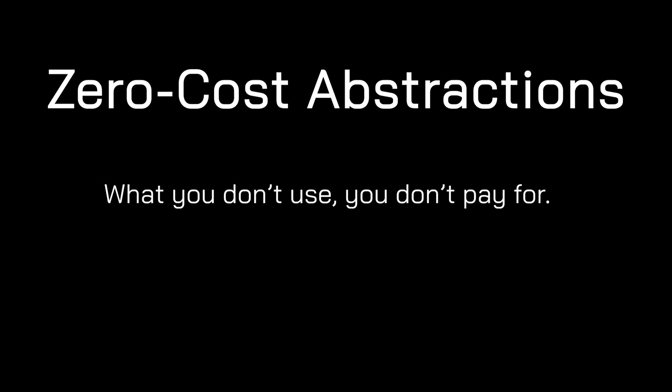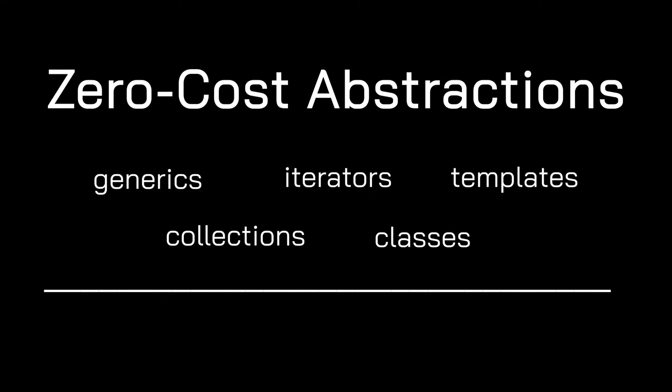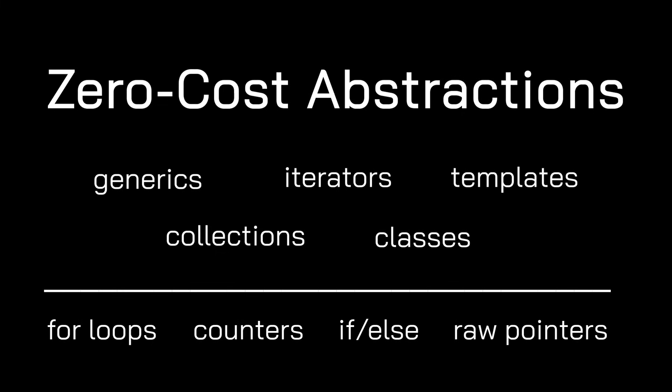First, let's talk about an amazing feature Rust took from C++: the principle of zero-cost abstractions. This principle can be summarized as: what you don't use, you don't pay for, and what you do use, you couldn't have hand-coded any better. This means high-level abstractions like generics and collections should not impose any runtime overhead compared to low-level abstractions like loops and counters.